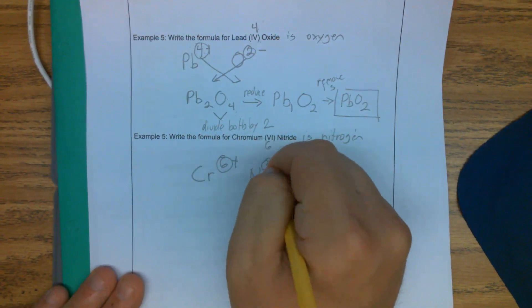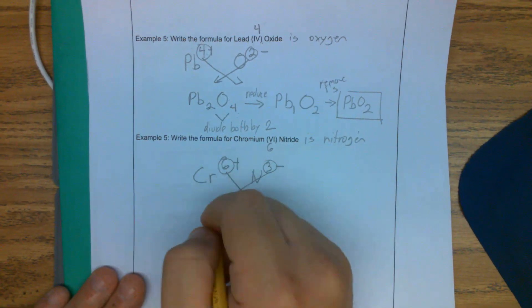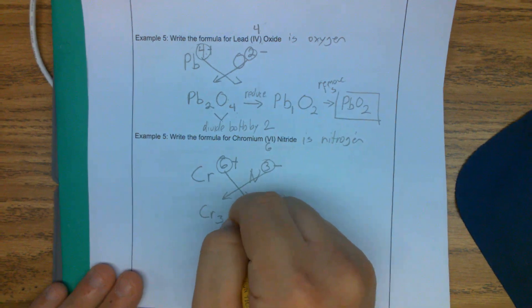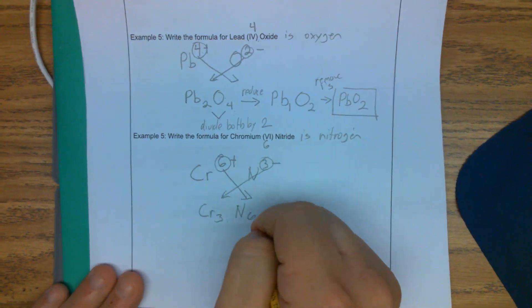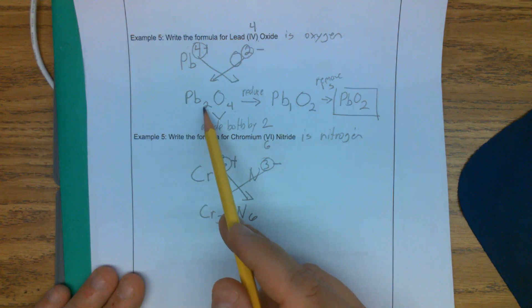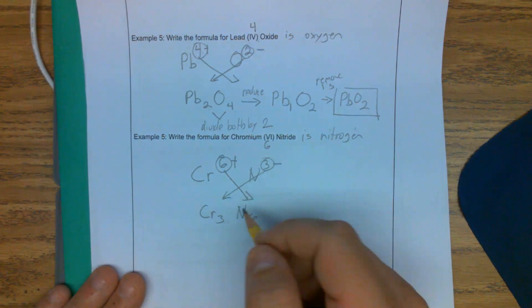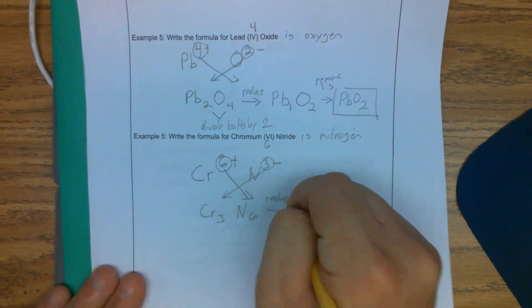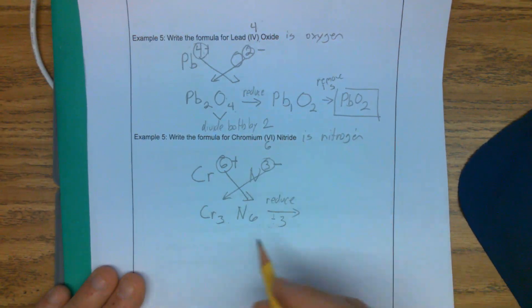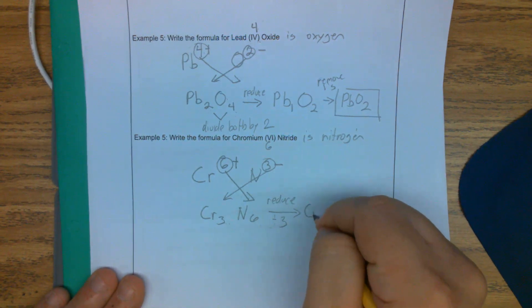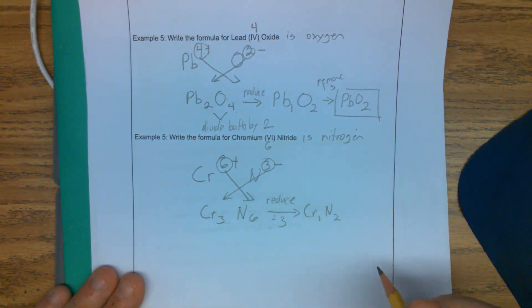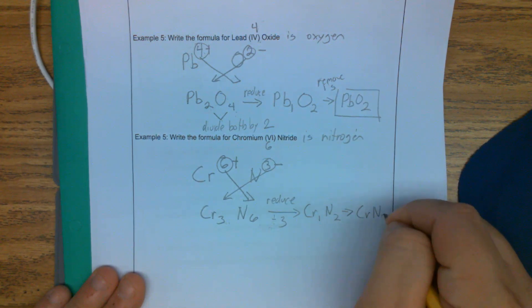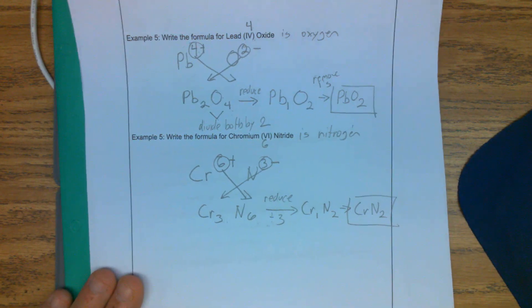All right. So then we'll do our crisscross method. So we should get CR three N six. Three comes down. Six comes down. And so like we saw before, this is three and six. We can reduce. So we're going to divide by three. So this would be CR one N two. Or we can just say it's CR N two. And that's it.